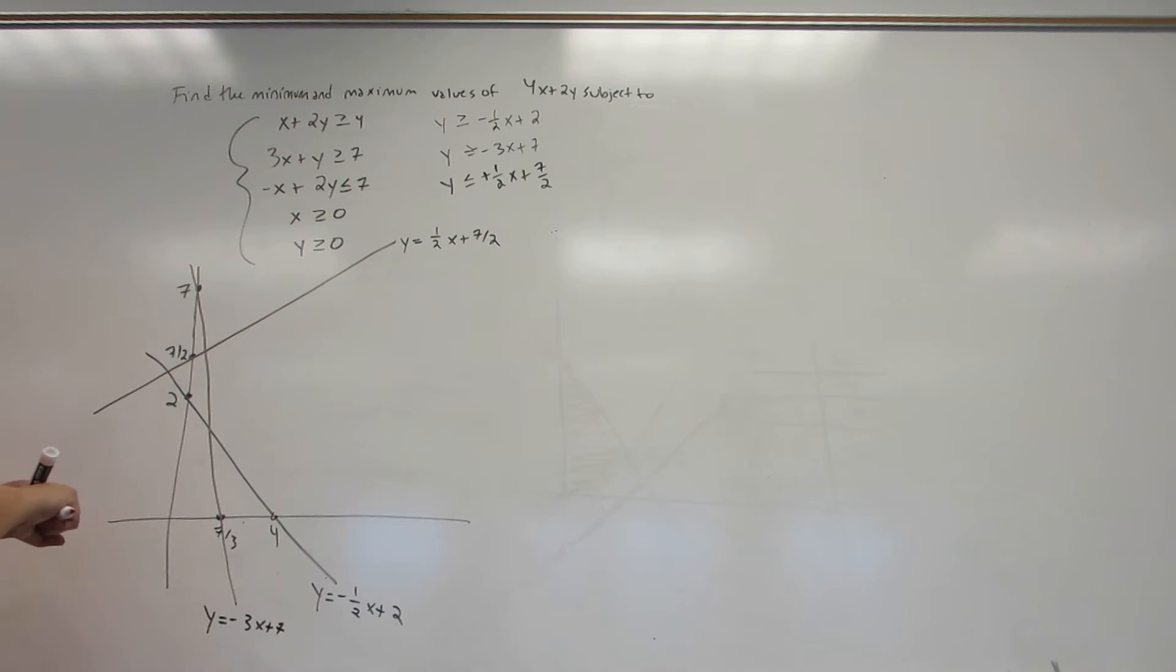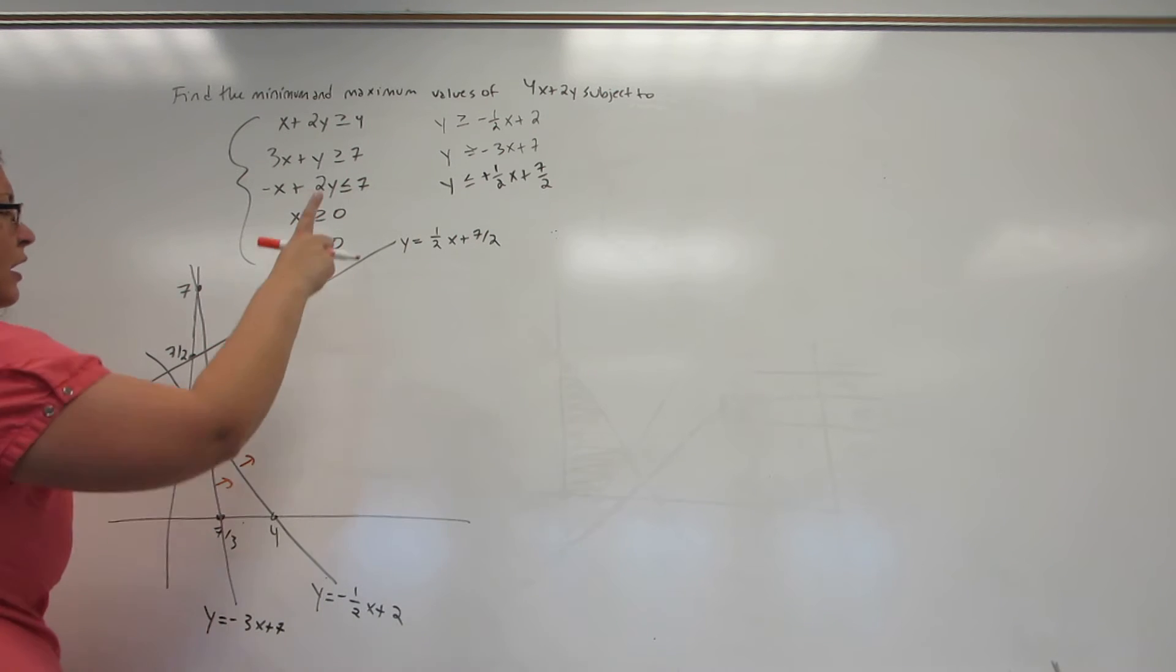Now we're going to find our region. I am above the minus a half X plus 2 and the minus 3X plus 7. I know, especially on that last one, it doesn't look much above, but given the choice, we're always going to choose either above or right for greater than or equal tos.